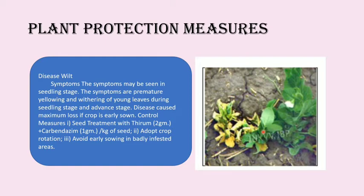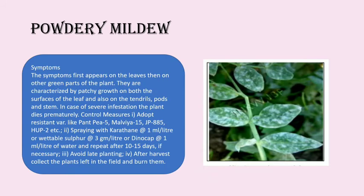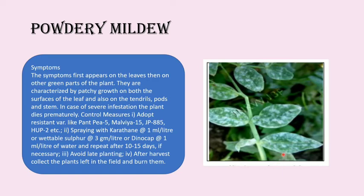Next is powdery mildew. If you observe the leaves of the pea, white patches are seen on the leaves and also on the stem. It is characterized by patchy growth on both surfaces of the leaf and also on the tendrils and pods. In case of severe infestation the plant dies prematurely.